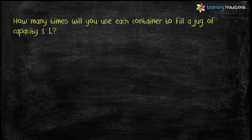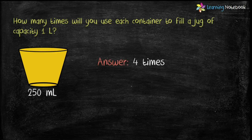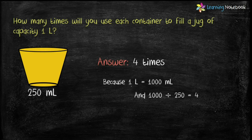Now the second container has capacity of 250 milliliter. How many times will we use it to fill a one-liter jug? One liter equals 1000 milliliter, and 1000 divided by 250 is four. So we will use this container four times to fill a jug of one liter.